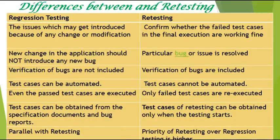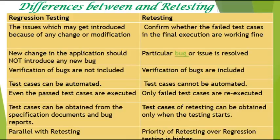Now let us look into the major differences between regression testing and retesting. First: if there is any change or modification in the existing software, we check whether basic functionality is not broken — that's regression testing. But in retesting, we confirm whether the failed test cases are fixed in the build given by the developer. Second: in regression testing, we check if any new bug is introduced because of the new functionality or changes, but in retesting we check whether the old reported bug has been fixed.